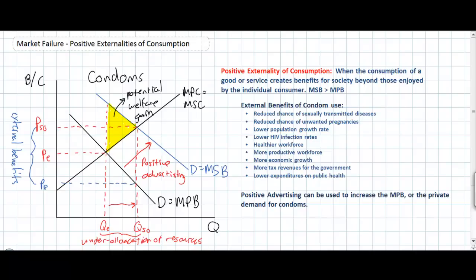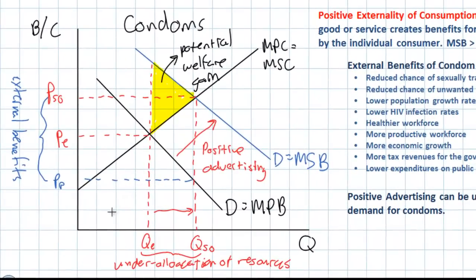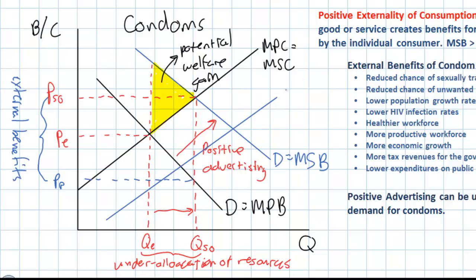This market failure can be reduced or eliminated through positive advertising if such a campaign is successful at increasing demand. Of course, another option available is to subsidize condoms. As we have seen in previous lessons, a subsidy is a determinant of supply, and a subsidy which shifts the supply curve outward can help us move along our marginal private benefit curve and increase the equilibrium quantity closer to the socially optimal level. This would result in a lower price for condoms.